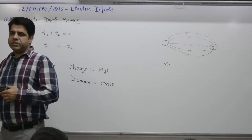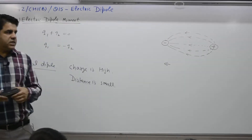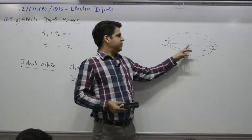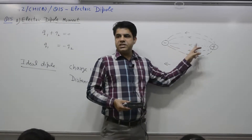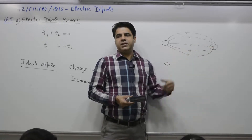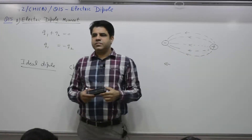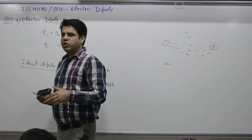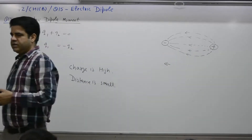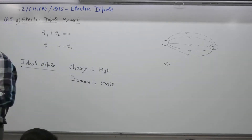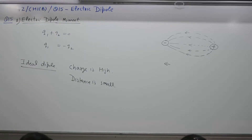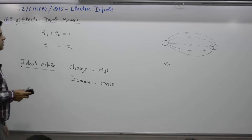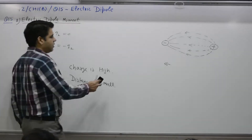Why do we use 2l for the separation? The purpose is mathematical convenience — it helps to mark l from the center in each direction. As you will see in the next two derivation questions, using 2l makes calculations easier.